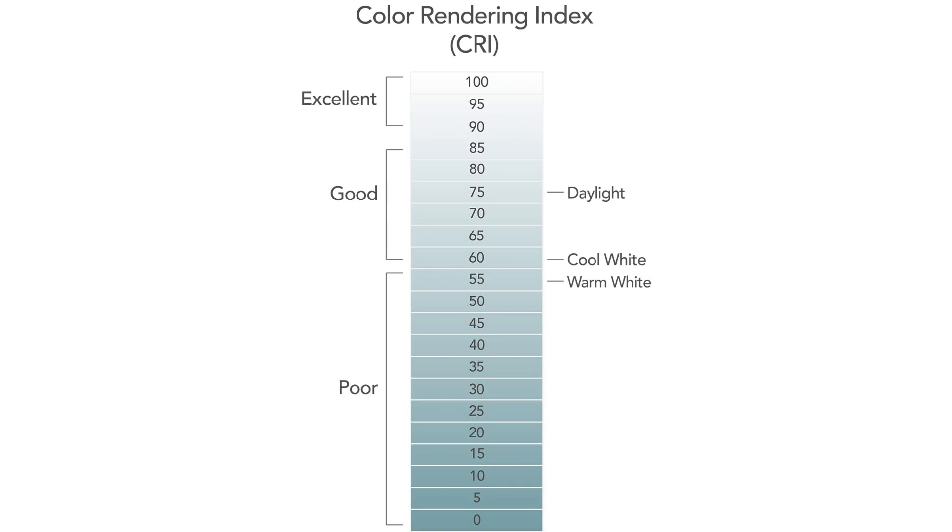Basically, the lower the CRI the poorer quality the light. Most LEDs nowadays range from 75 all the way up to 98 CRI, which is pretty good, but it's not tungsten, which can have a CRI of 100 — perfect color rendition — although the color temperature is warmer compared to the sun. This is why some still prefer other light sources to LEDs.